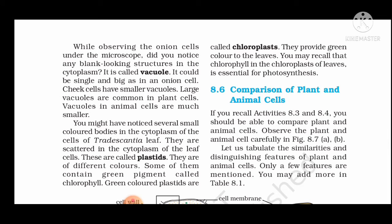While observing onion cells under the microscope, you may notice blank-looking structures in the cytoplasm. These could be single and large vacuoles in onion cells. Smaller vacuoles are common in plant cells, while large vacuoles are also found.